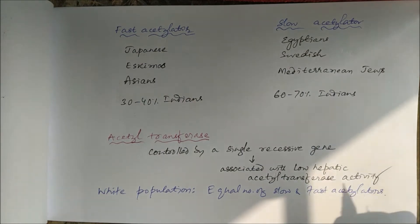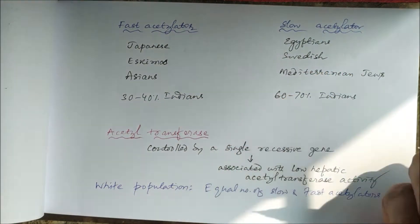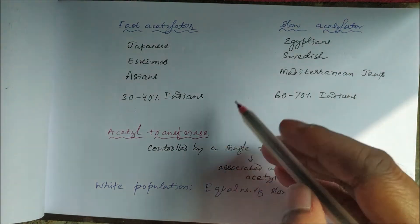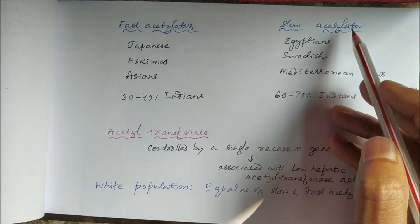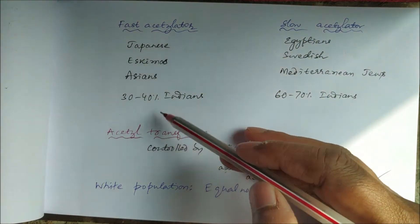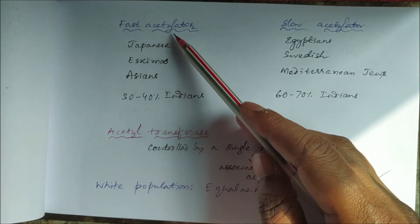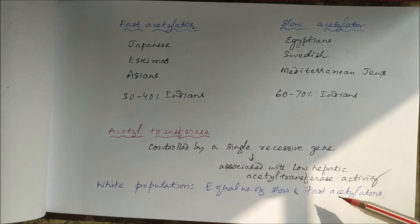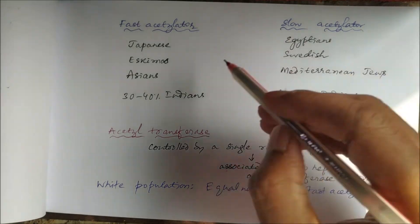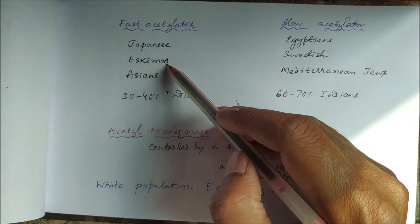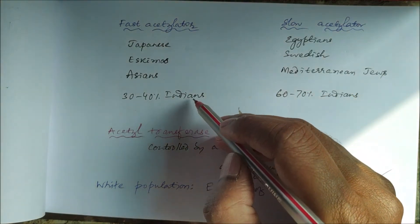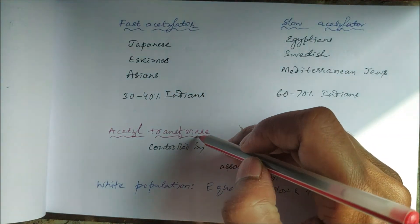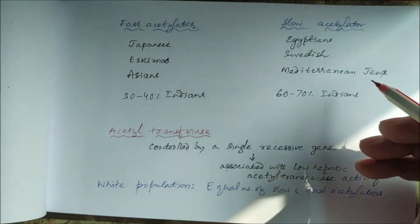The world population can be divided into slow acetylators and fast acetylators. Populations in which acetyltransferase activity is less are called slow acetylators, and those with higher activity are called fast acetylators. White populations have roughly equal numbers of slow and fast acetylators, whereas Japanese, Eskimos, Asians, and 30 to 40% of Indians are fast acetylators, meaning acetyltransferase activity is high in these populations.